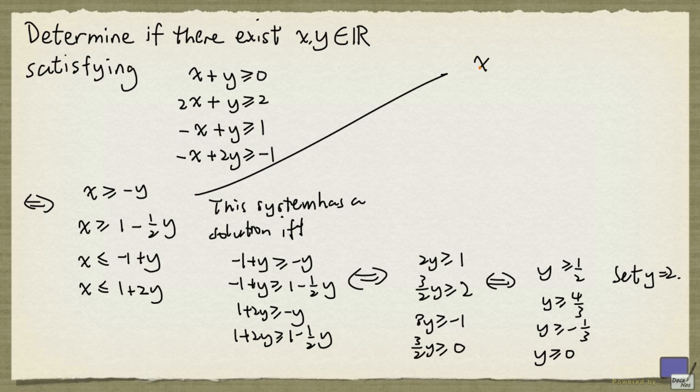So when y is 2, this is x greater than equal to minus 2, and this is x greater than equal to 0. This is x less than equal to 1, and this is x less than equal to 5. And so x can be any value between 0 and 1. So in particular, we can set x equal to 0.